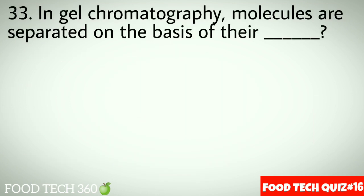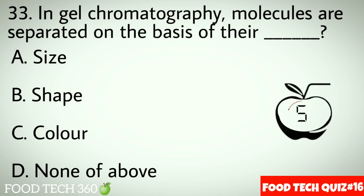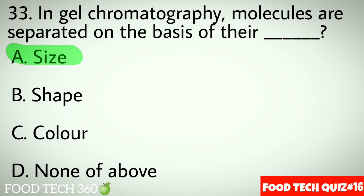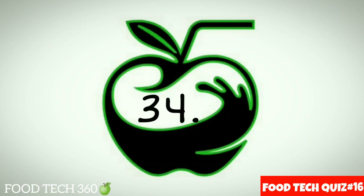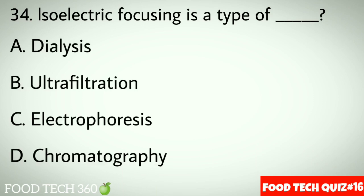Question No.33: In gel chromatography, molecules are separated on the basis of dash. Options A: Size. B: Shape. C: Color. D: None of above. Correct answer A: Size.